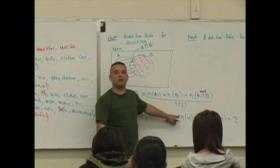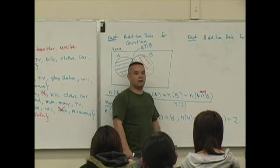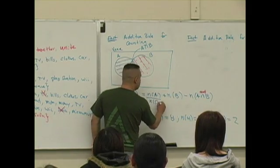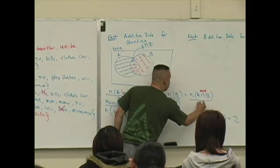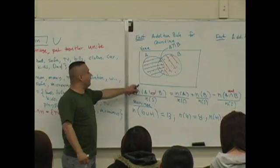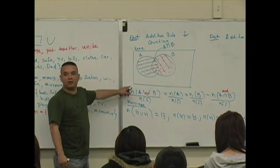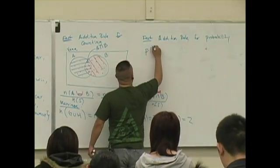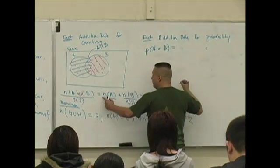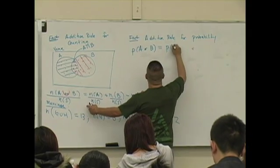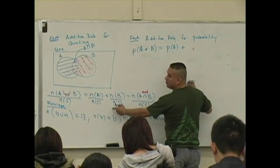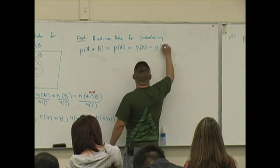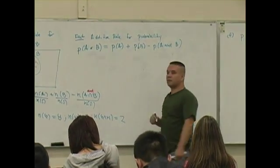Does anybody recognize any of these definitions? This is a definition of probability of A or B, which equals the probability of A plus the probability of B minus the probability of A and B.